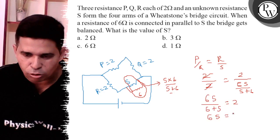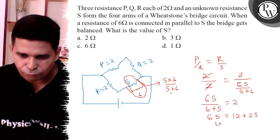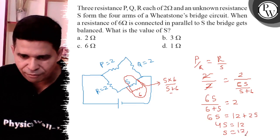So 6S is equal to 12 plus 2S. Therefore 4S is equal to 12, so S is equal to 12 by 4.